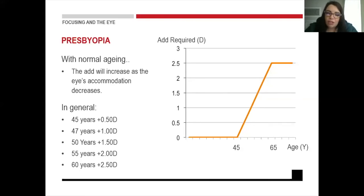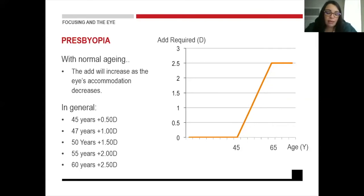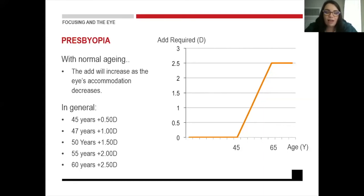With normal aging, the add will increase as the eye's accommodation decreases. So a patient's prescription can tell you a lot about that patient. If someone comes in who is a myope, you can assume they liked reading when young, or maybe it's genetic. And if you look at the add, you can estimate their age — though please don't say it aloud. A person's add can give you a very good estimation of their age: at about 45 you might have a plus 0.50 or plus 0.75 add, and at 47 it goes to a plus 1.